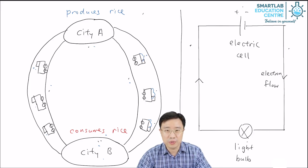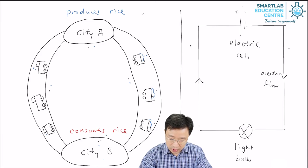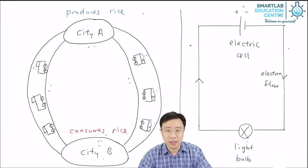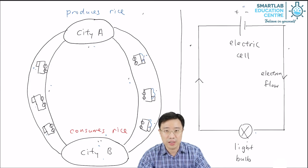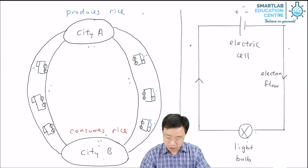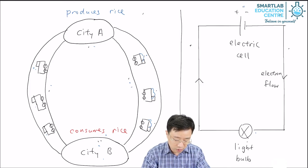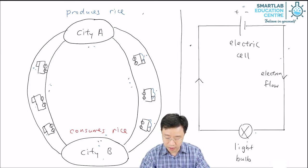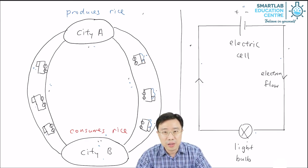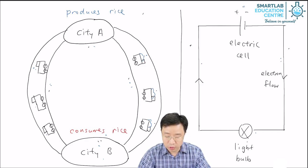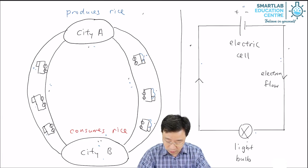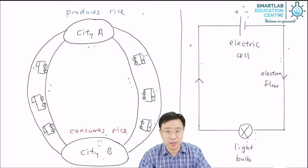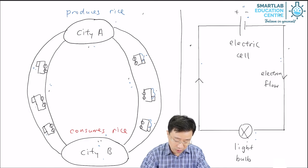What happens in the electric circuit is very similar to this. You have the electric cell supplying electrical energy, just like City A supplying rice. You have the light bulb consuming electrical energy, just like City B consumes rice. And just like the roads linking City A to City B, we have the wires linking the electric cell to the light bulb. And these wires carry electrons, which themselves carry electrical energy from the electric cell to the light bulb, just like the trucks carrying rice from City A to City B.